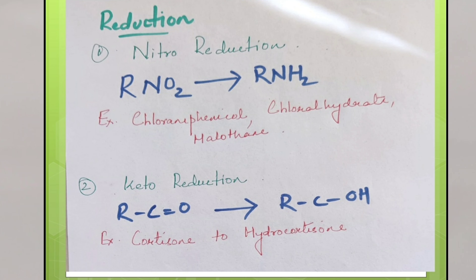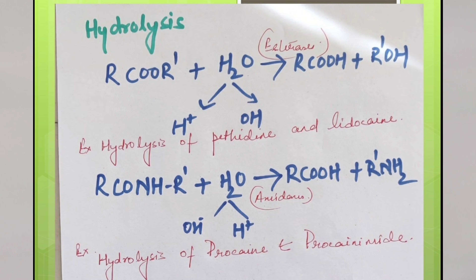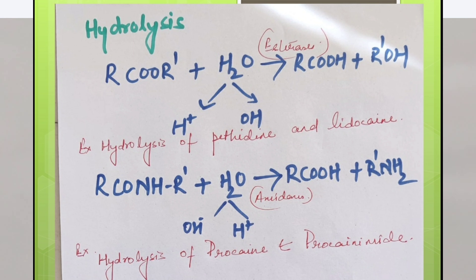Next, hydrolysis reaction — water participates in hydrolysis reactions and it breaks down the bond of the compound. This bond can be an ester bond or an amide bond. Enzymes which catalyze breakage of the ester bond are known as esterases, and enzymes which catalyze the breakage of amide bonds are amidases. Esterases hydrolyze the ester bond and amidases hydrolyze the amide bond. Examples of drugs catalyzed by esterases are bethidine and lignocaine, and examples that undergo hydrolysis by amidases are procaine and procainamide.